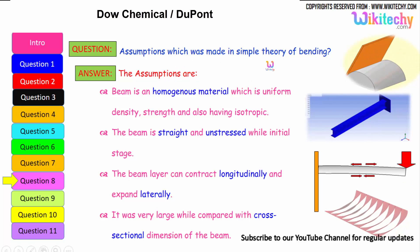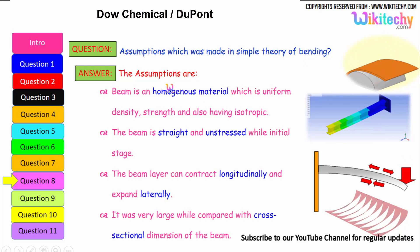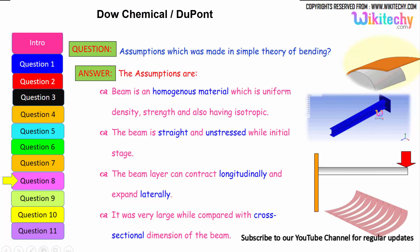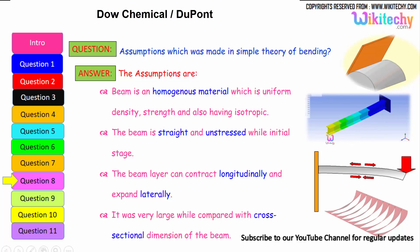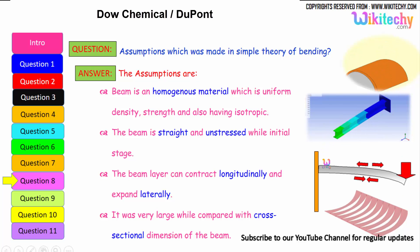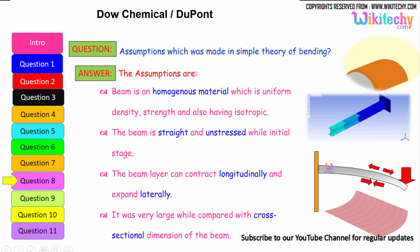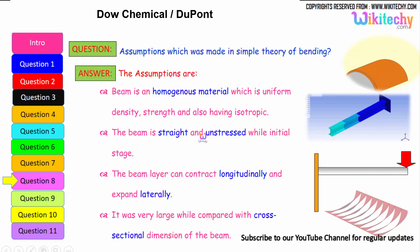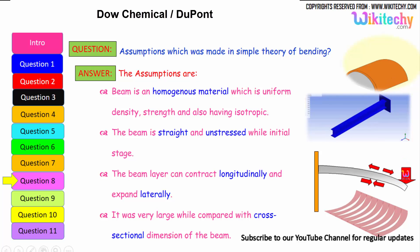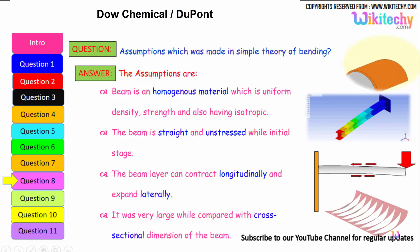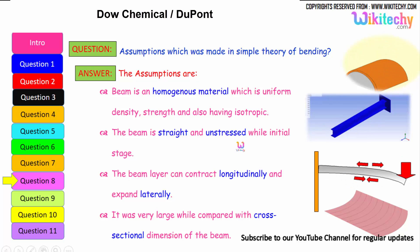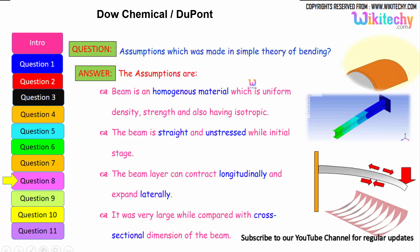What are the assumptions made in the simple theory of bending? The beam is made of homogeneous material with uniform density, strength, and is isotropic. The beam is straight and unstressed in its initial stage. The beam can contract longitudinally and expand laterally. The span of the beam is very large compared with the cross-sectional dimensions.